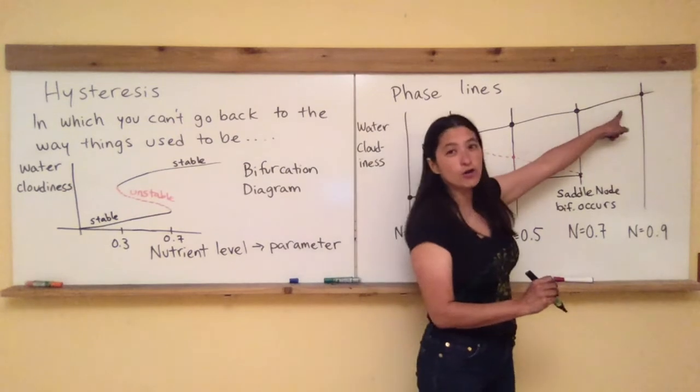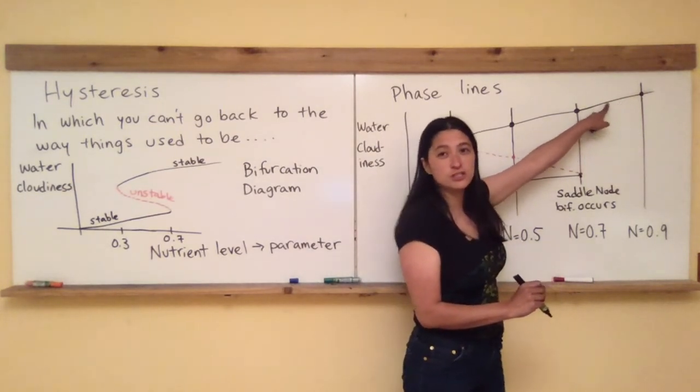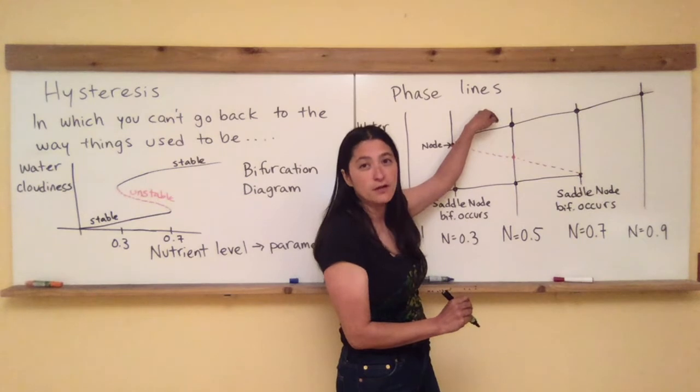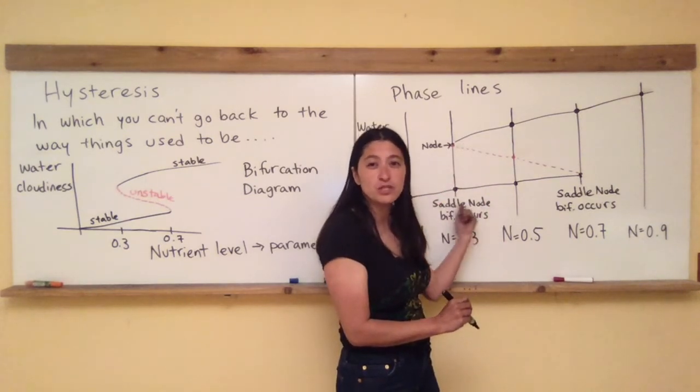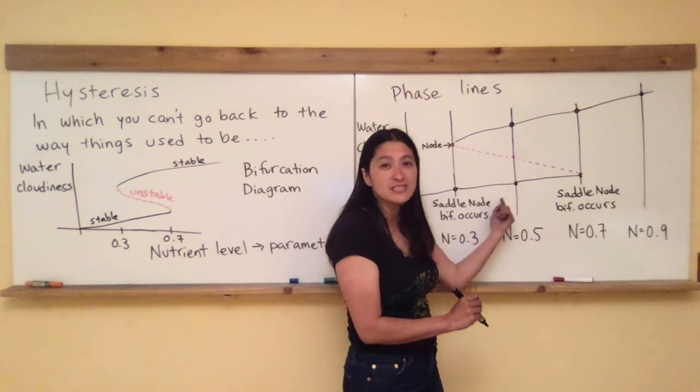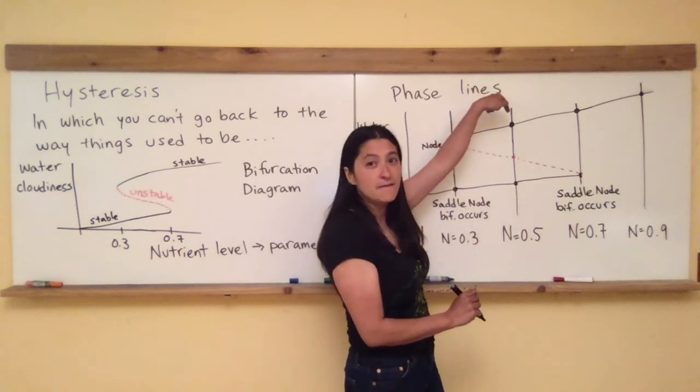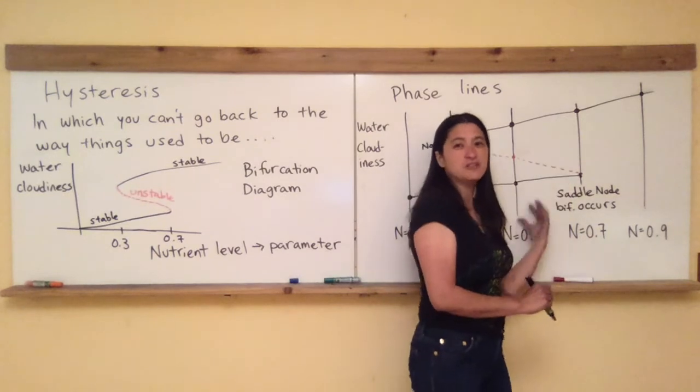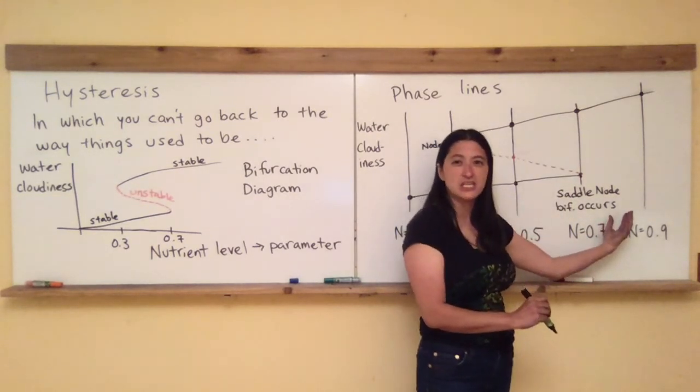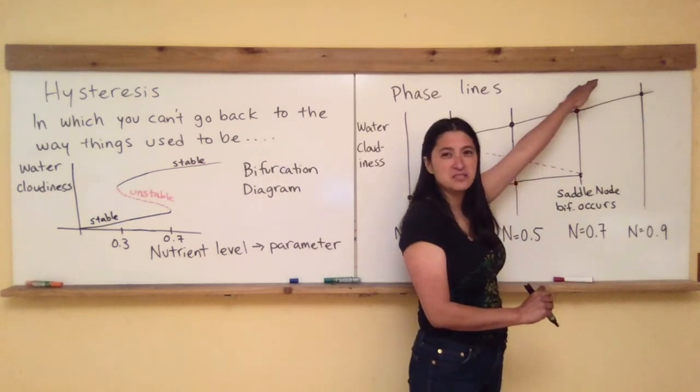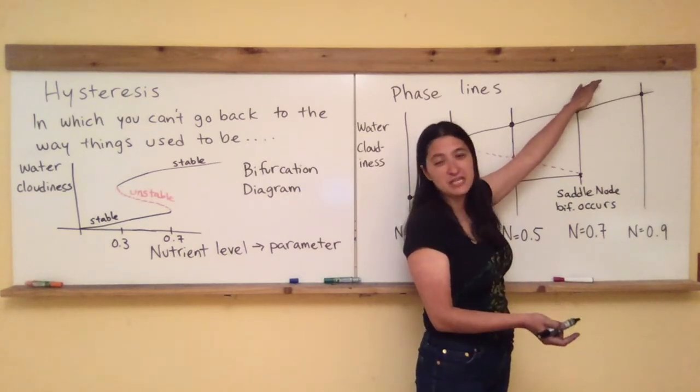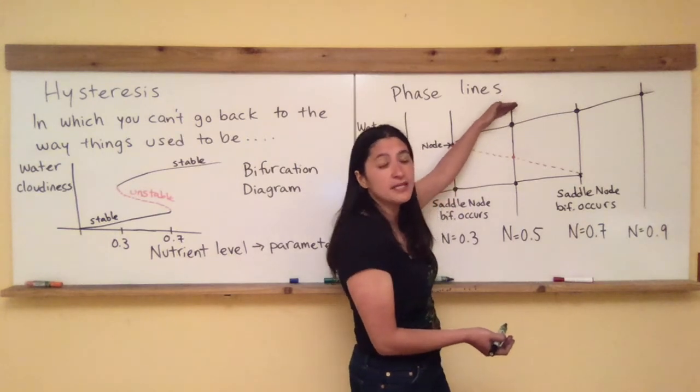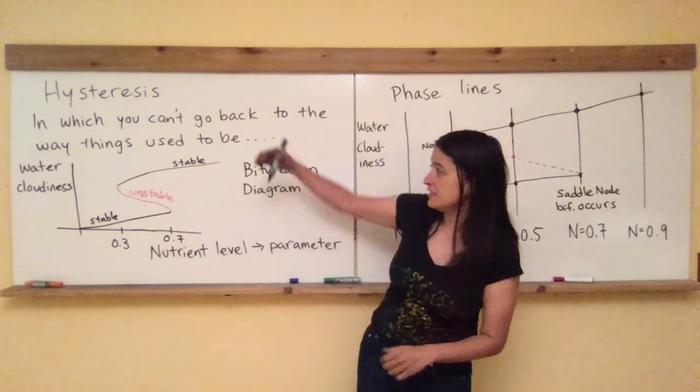Because look what happens if you're already over here, up here, and you start to decrease the nutrient level, now you're in the basin of attraction for the higher equilibrium point. The one that you didn't even know existed when you were coming at it from below here. You're oblivious to the fact that your lake could have been behaving this way had you started with an initial condition that was sufficiently high enough. And now, since you took it to the other side of that second saddle node bifurcation, now you're up in that zone. And you're like, my lake is so gross, I don't even want to get in it. Well, maybe if I turn down the nutrient level, I'll go back to how it used to be. It's not going to go back to the way things used to be. It's stuck up here on the higher branch of stability.